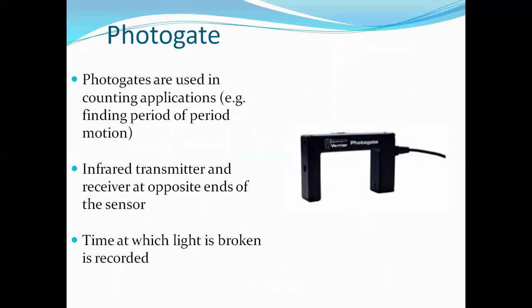Photo gate. These photo gates are used in counting applications. Number of objects that has been passed on internally or through particular photo gate. Infrared transmitter and receiver at opposite ends of the sensors. And the time at which the light is broken is recorded. So when object has disconnected from one sensor, simultaneously it detects that one pulse has been taking place. Continuously as a chain system. The device will be going on. Example autogate system. Thank you.